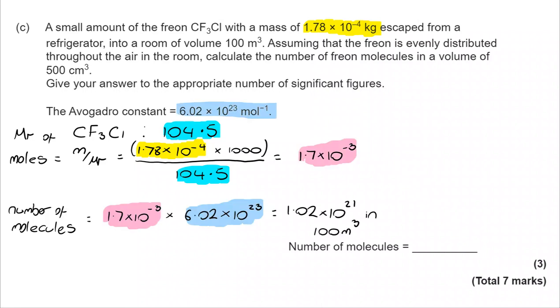So the number of molecules is then going to be that number of moles multiplied by Avogadro's number, which is the number of atoms or molecules in one mole of a substance. That then tells us we've got 1.02 by 10 to the power of 21 molecules in 100 meters cubed.